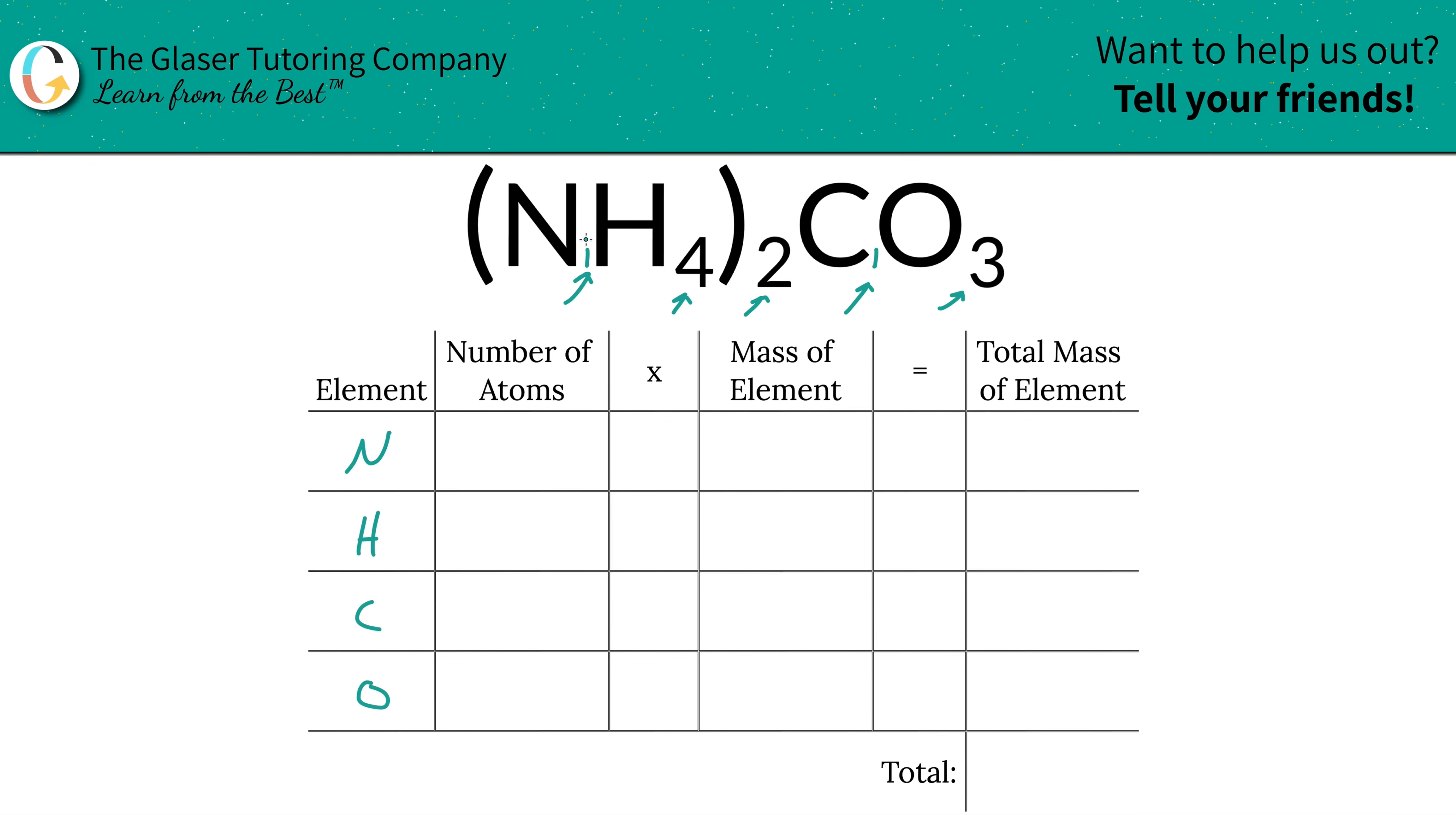Now the total number of atoms for nitrogen is not 1, because you have 1 nitrogen in the ammonium polyatomic anion. You have 2 ammoniums, and therefore you'd have 2 nitrogens. In other words, simply take the inner subscript, multiply it by the outer subscript to find the total. So you've got 2 nitrogens.